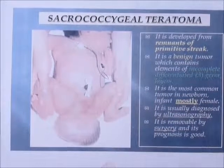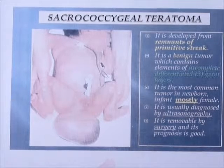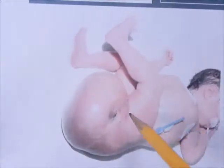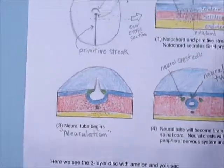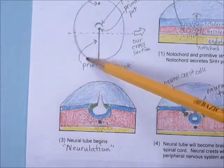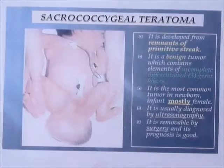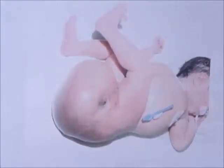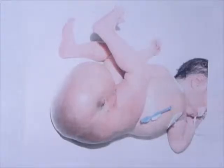You can get something like this: sacrococcygeal teratoma — basically a lump. You could call it a tumor, but not a cancerous one — it's benign, just a lump. Not really dangerous, just very inconvenient. It occurs right there at the bottom because the primitive streak was right where the bottom ends and the legs are down here — exactly the location you'd expect problems with the primitive streak. Interestingly, this happens more with girls than boys, though I don't know why. Surgeons have to try to cut that off and reconstruct the area to make it look normal.